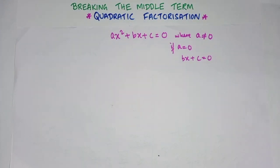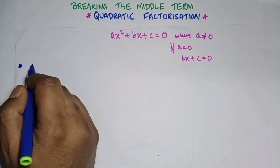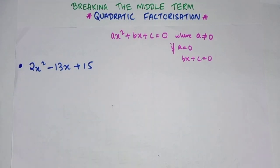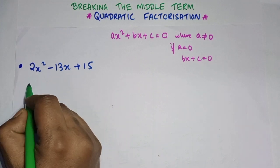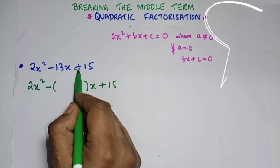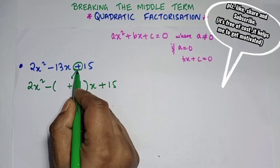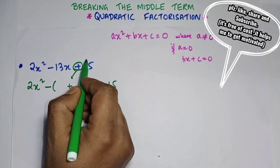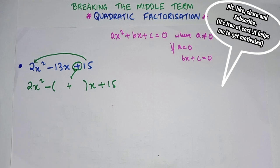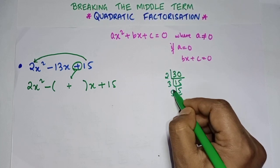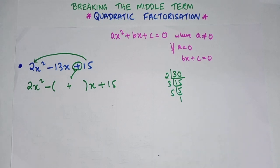Let's use the magic cross rule with the example 2x² - 13x + 15. We write 2x² minus, then break 13 into a bracket, then x plus 15. The sign in the middle must match — since it's minus, the middle sign will be minus. Now multiply 15 and 2 to get 30. We do the LCM of 30.